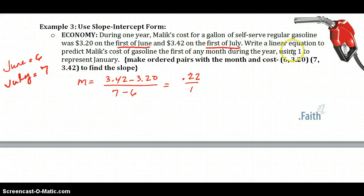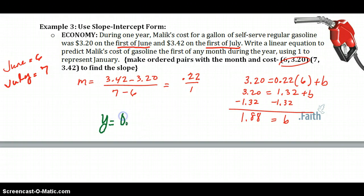But I need a linear equation. So where does it hit the y-axis? That's the next thing I need to know. So let's pick one of these points. I'm going to pick the first one, just because 6 is smaller. So y equals m, which is .22, times x, which is 6, plus b. So we're going to have to solve for b. 3.20 equals 1.32 plus b. Subtract 1.32 from both sides. And our b here is 1.88.